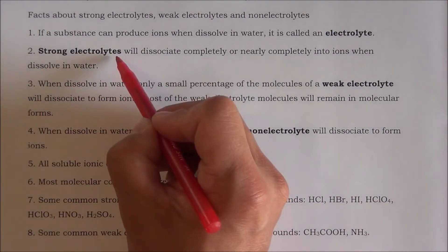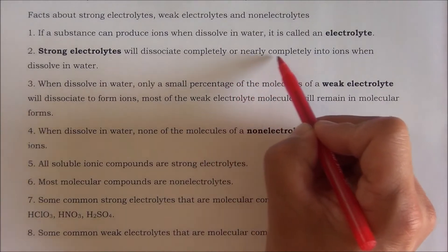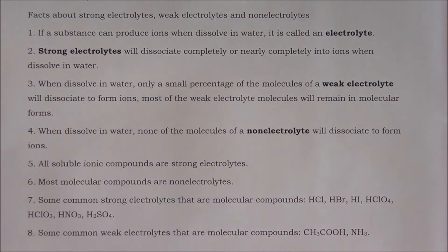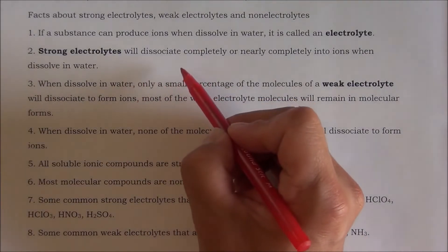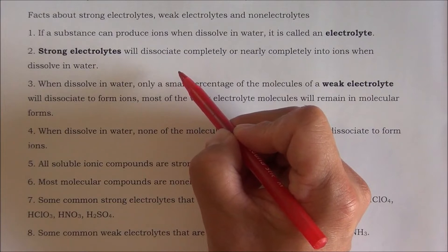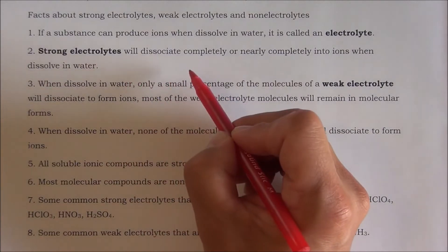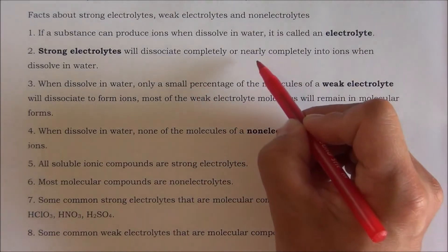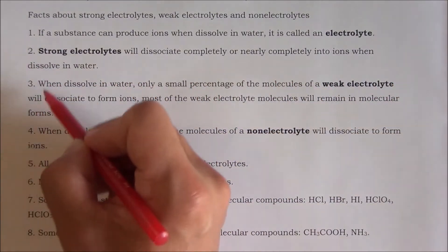Number two: strong electrolytes will dissociate completely or nearly completely into ions when dissolved in water. You may wonder, what do you mean by dissociate? As we have learned in class, a cation and an anion can come together to form a neutral compound. Dissociate means the cation and the anion will become separated to form free ions.